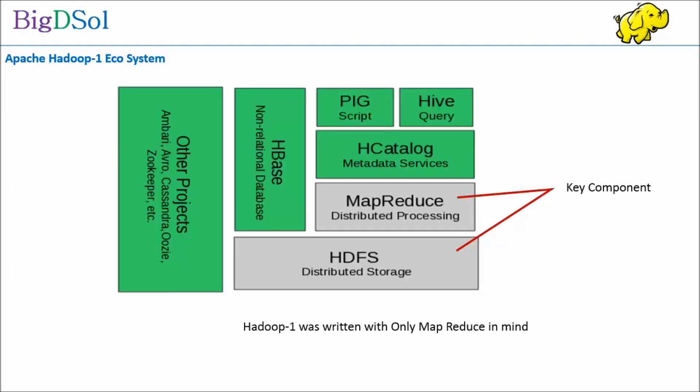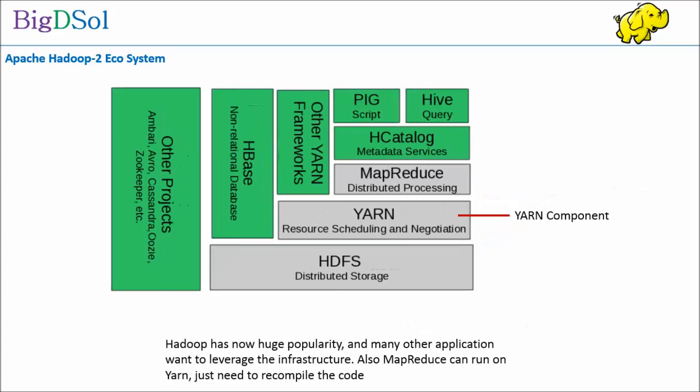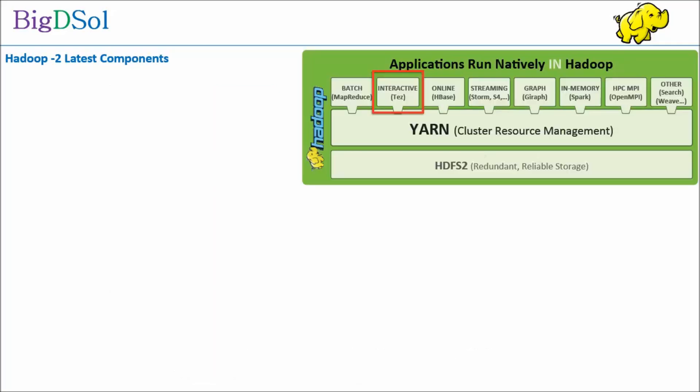Let's compare the Hadoop 1 ecosystem and Hadoop 2 ecosystem. In Hadoop 1, we have HDFS and MapReduce. In Hadoop 2, YARN comes on top of HDFS and manages all requests, including those from MapReduce. YARN is the middle layer between applications and HDFS storage, making Hadoop 2 a viable and fast-adopting product.